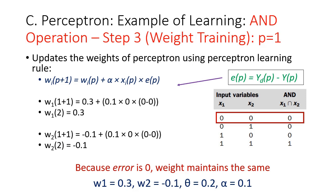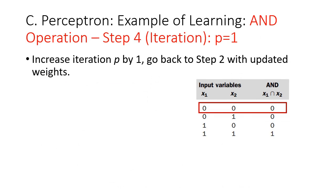We then proceed to step 3, weight training. Because our error is 0, the weight remains the same — plugging in 0 into the weight update formula results in 0 being added to the current weight, so you still get the same weight. The final step is iteration; we are done with iteration 1.